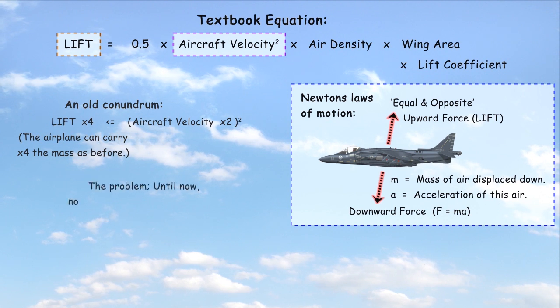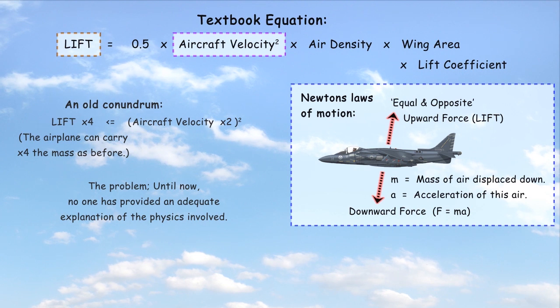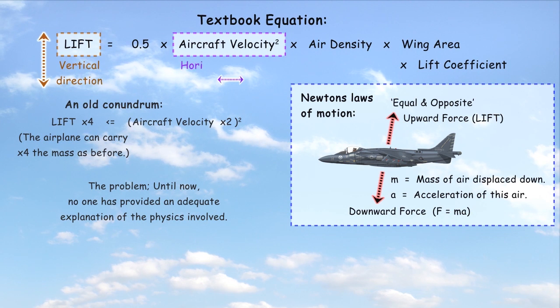The problem is that until now, no one has provided an adequate explanation of the physics for this relationship. It is unclear exactly how vertical lift is related to horizontal velocity, as these parameters are in different directions.